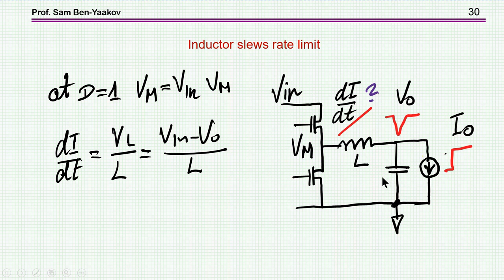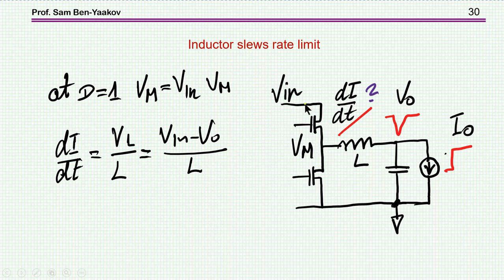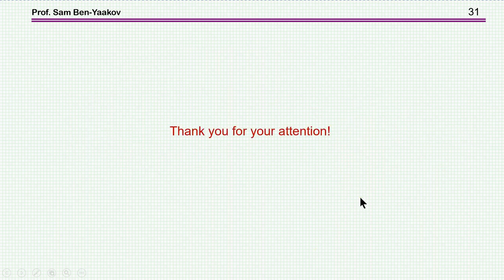To remedy the dI/dt limitation you can use a smaller inductor or inject current by a different method. One must realize this is far beyond bandwidth or frequency response — it is a large signal phenomenon. If momentarily a duty cycle larger than one were achievable — equivalent to a voltage larger than V_in — a higher dI/dt would result. Sometimes an auxiliary circuit with a much larger voltage is connected momentarily to increase the dI/dt. This brings me to the end of this presentation.